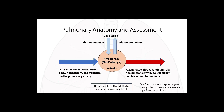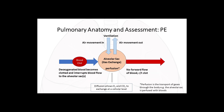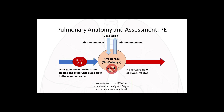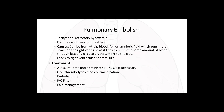Here is normal perfusion and ventilation of the alveolar sac. With altered circulation, such as a blood clot, blood flow to the capillaries passing through those alveolar sacs is interrupted. Once blood flow is interrupted, there is no more perfusion of those alveolar sacs, which does not allow CO2 and oxygen to exchange at a cellular level. This alveolar sac is now considered dead space ventilation, like the trachea and bronchi, with no gas exchange. There will also be no forward flow of blood related to that clot, which puts more strain on the right ventricle.